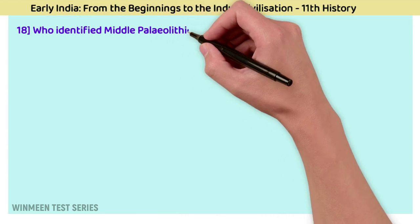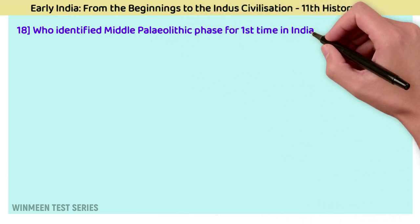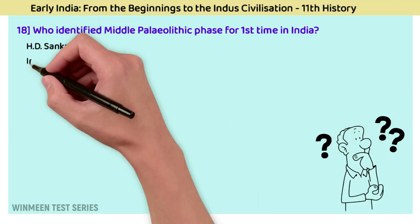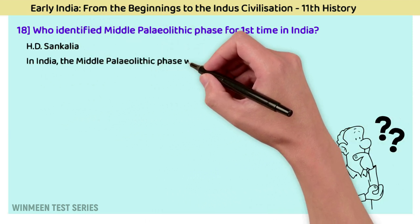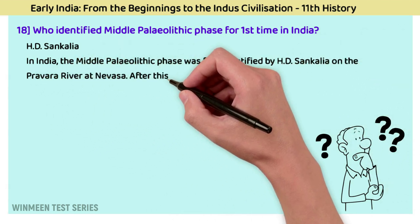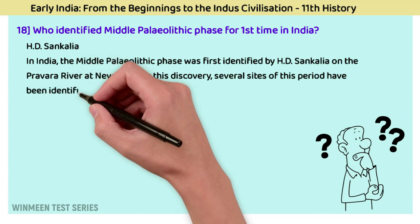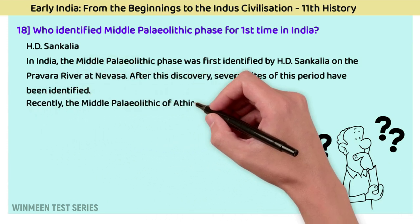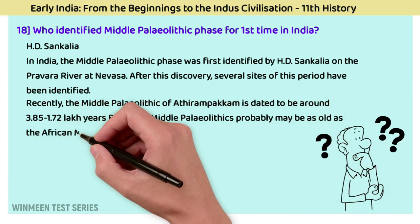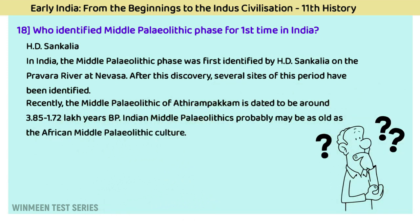Question 18: Who identified the Middle Paleolithic phase for the first time in India? The answer is H.D. Sankalia. In India, the Middle Paleolithic phase was first identified by H.D. Sankalia at the Pravara River at Nevasa. After this discovery, several sites of this period were identified. Recently, the Middle Paleolithic of Attirambakkam is dated to around 3.85 to 1.7 lakh years, and Indian Middle Paleolithic probably predates the African Middle Paleolithic culture.